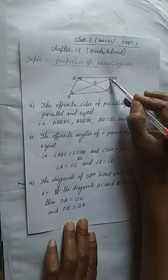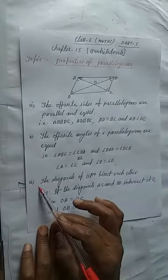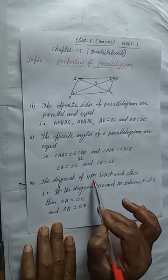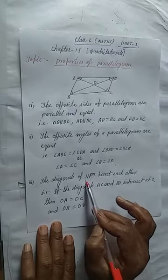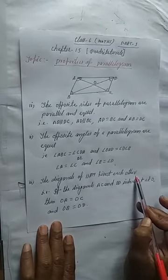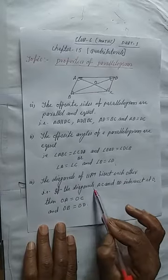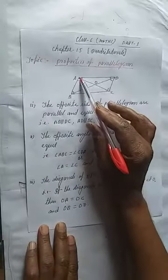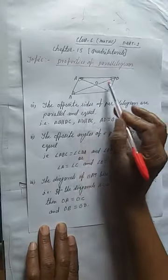Okay student. And third property is like this: the diagonals of a parallelogram bisect each other. So what is the meaning?